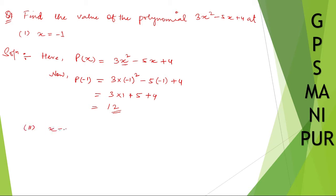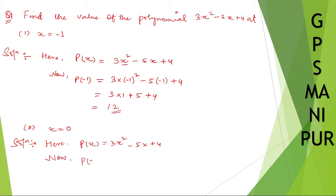Part (ii): x is equal to 0. We have p(x) equal to 3x² minus 5x plus 4. Now p(0) is equal to 3 into 0² minus 5 into 0 plus 4. 3 into 0 is 0, and minus 5 into 0 is also 0, so 0 minus 0 plus 4 equals 4. The answer is 4.